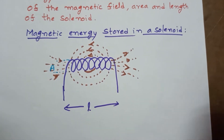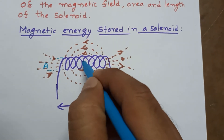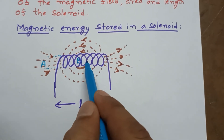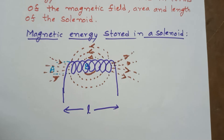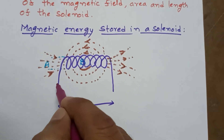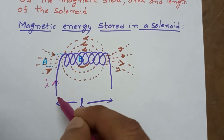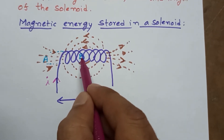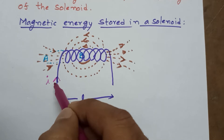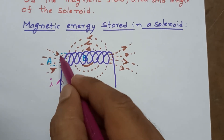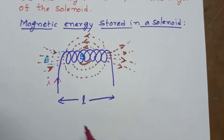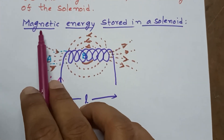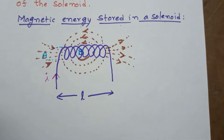This is the area A, and magnetic field induction B is present due to the self-inductance in this coil. Let I be the current passing through the coil. A is the area of the coil and L is the length of the solenoid. Now we have to calculate the magnetic energy stored in the solenoid.